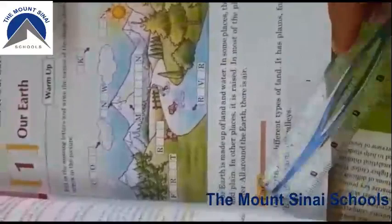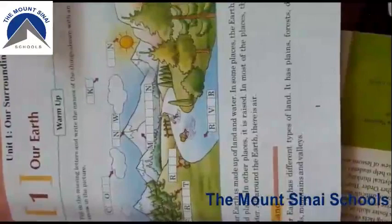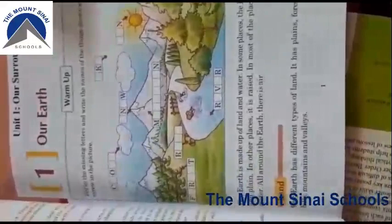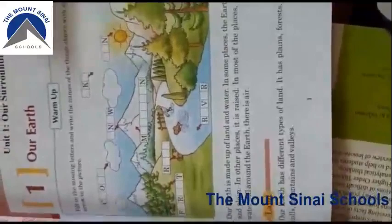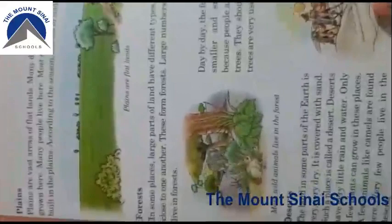Let's start our topic — the land. Our earth has different types of land: it has plains, forests, deserts, hills, mountains, and valleys. All the pictures you have seen before about these land types are very beautiful — you can even visit them when you have summer vacations with your parents. Now let's talk about the plains. As you see a picture in your book, there is a picture of the plains and flatlands where nowadays we are living.